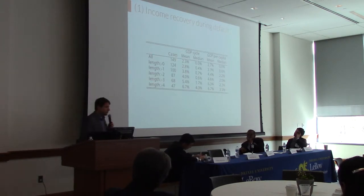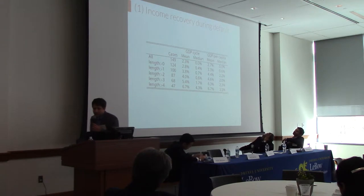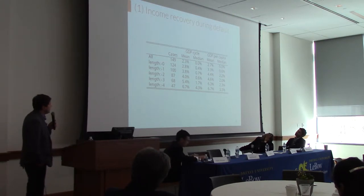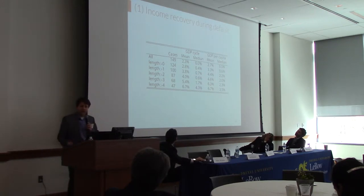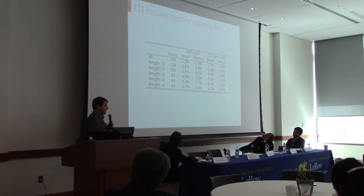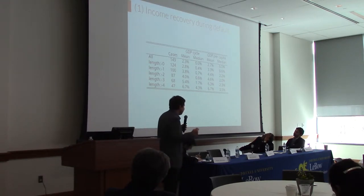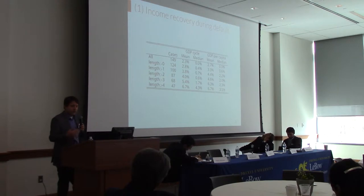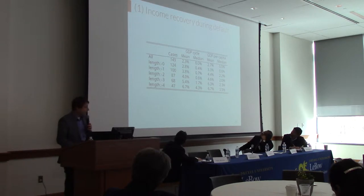The first issue is that income recovers between the time of default and time of restructuring. This table shows, for 149 cases, how much the GDP cycle and GDP per capita recover. When restructuring happens close to default, there is little time for income to recover. But as the time until restructuring lengthens, recoveries get larger — on the order of 4% to 6% depending on mean or median.